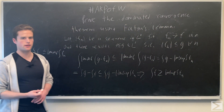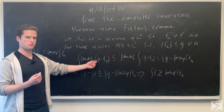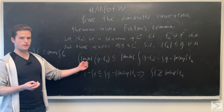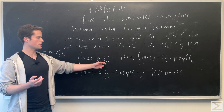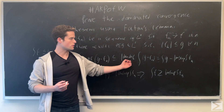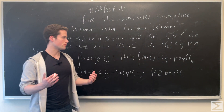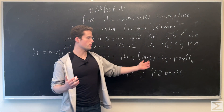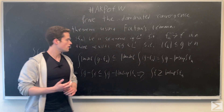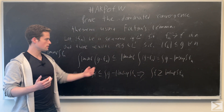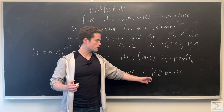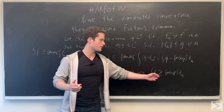Now using our other function, g minus fn, and applying Fatou's Lemma: on the left side we can take limits since g is constant and fn approaches f pointwise. On the right side we can pull things apart and we'll be left with the limsup of the integral of fn. Canceling the integrals of g on both sides, we're left with the integral of f being greater than or equal to the limsup of the integral of fn.